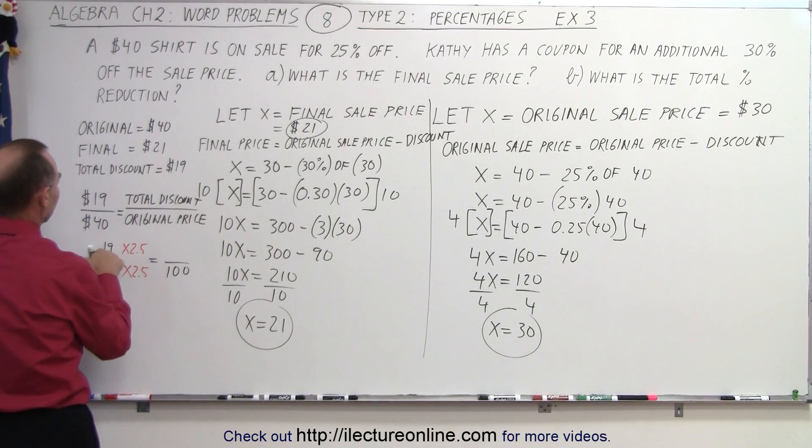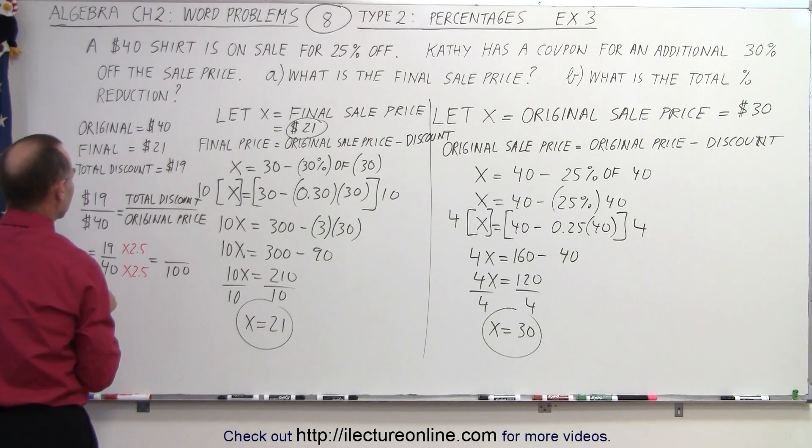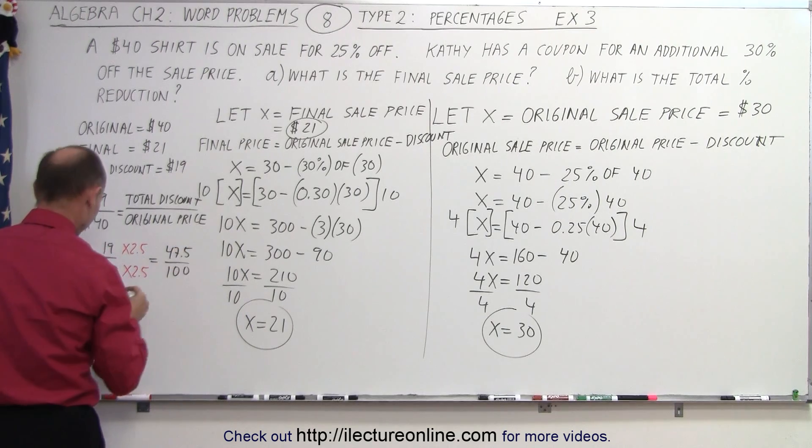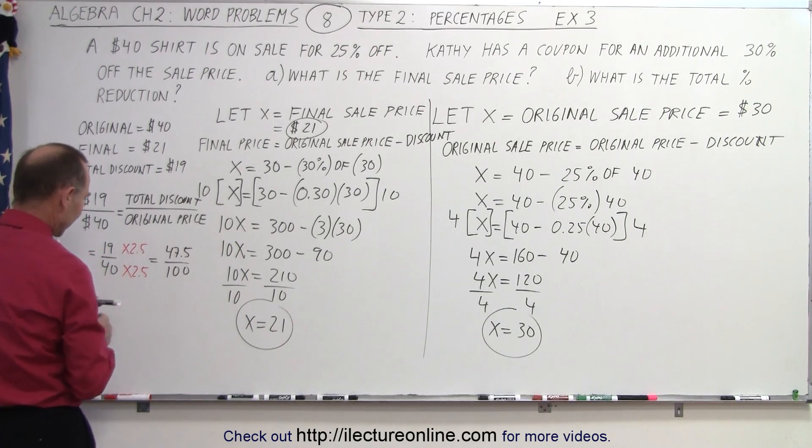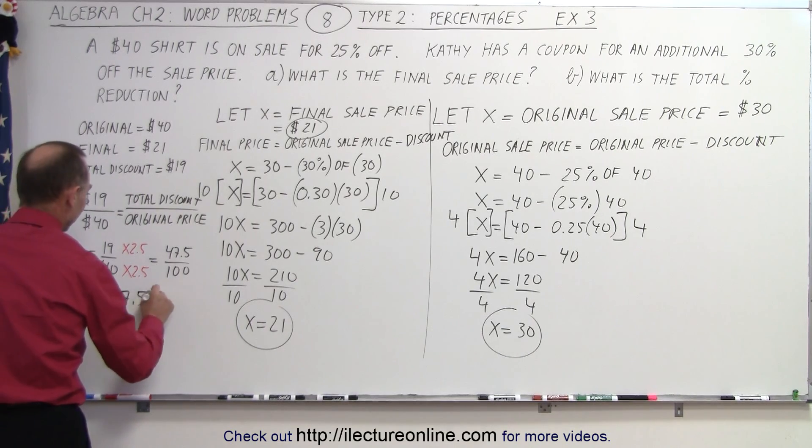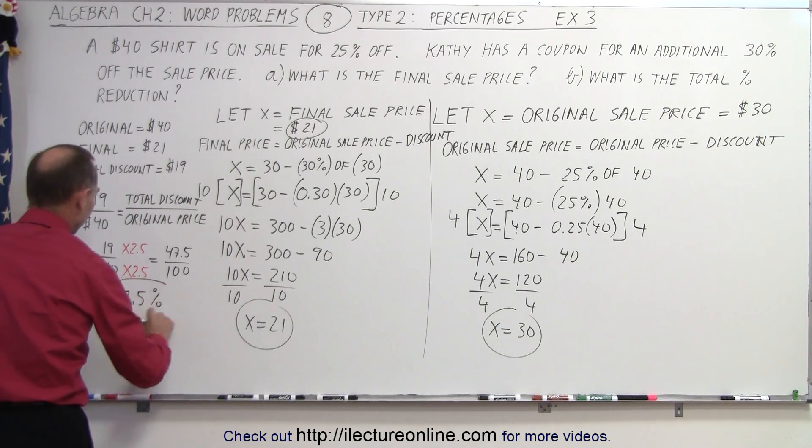And that gives us 100 in the denominator. And in the numerator, 2.5, that's, let's see, that's 38. And half of that would be 9.5. That would be 47.5. So you can see that 47.5 divided by 100 is equal to 47.5%. And so that would then be the